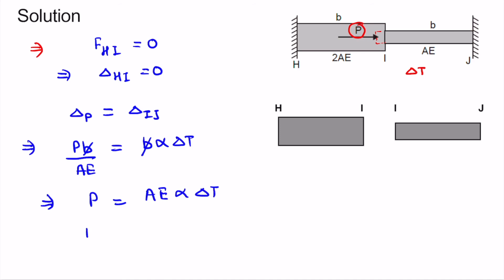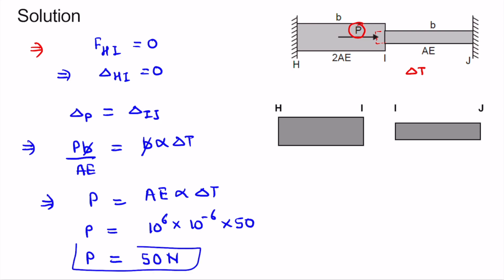Solving for P: AE is 10 to the power 6, alpha is 10 to the power minus 6, and delta T is 50 degrees Celsius. Therefore, the value of P is 50 Newton. This is our final answer — the value of the applied force P is 50 Newton.